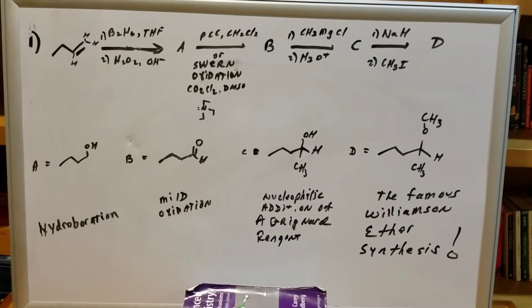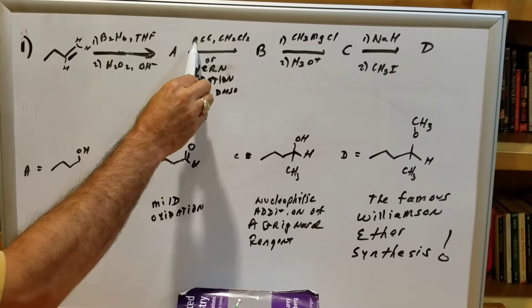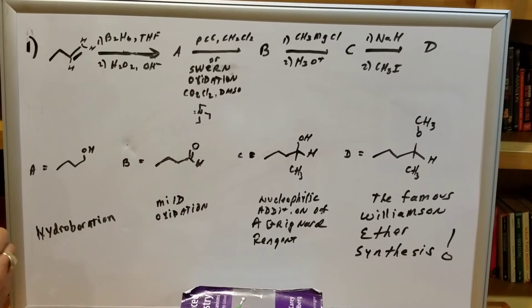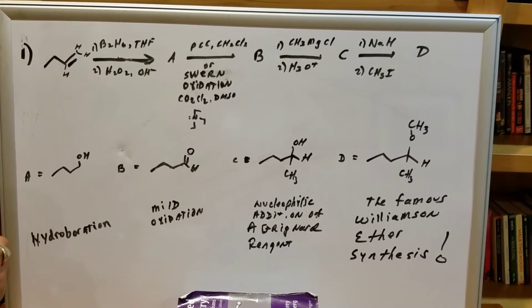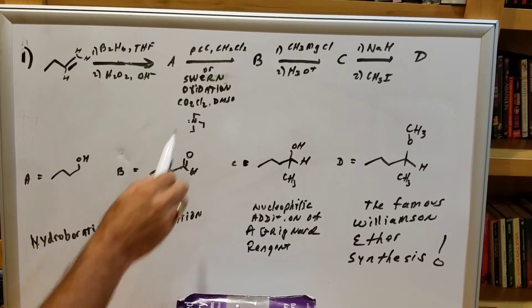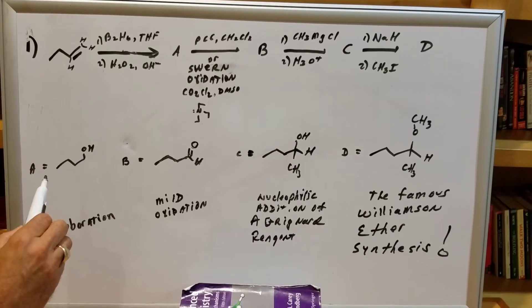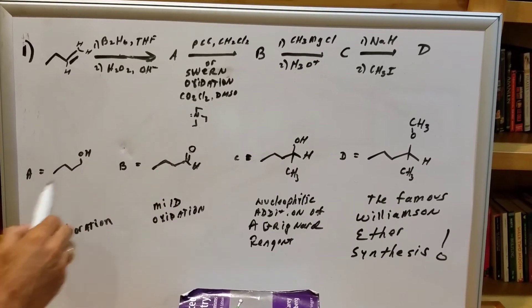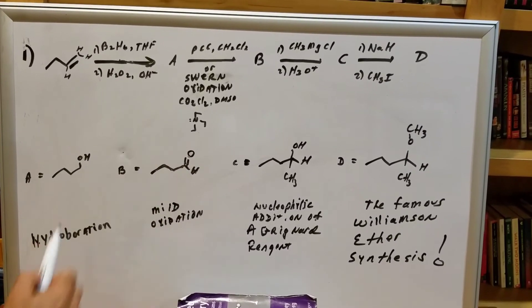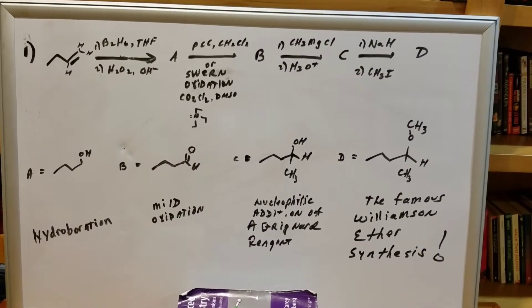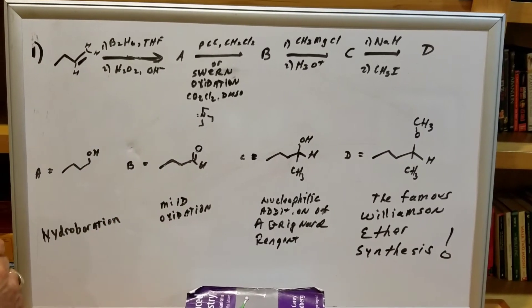In the second step, we're going to use what's called a mild oxidation, and we're going to use a chemical called PCC, or a newer chemical called the Swern oxidation, which is actually a witch's brew of oxalyl chloride, DMSO, and a base. This particular base is what we call triethylamine, and what it did, it takes the primary alcohol into the aldehyde.